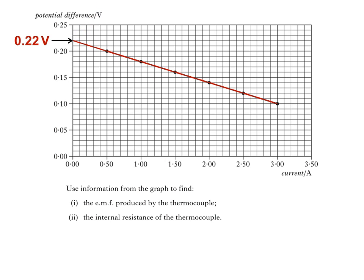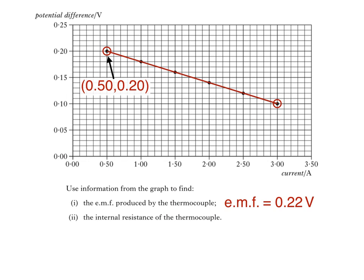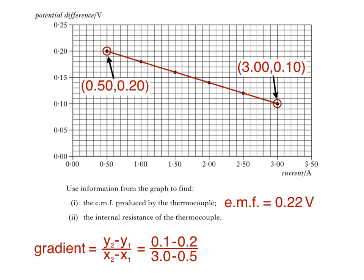Just remember a ruler for your exam, in case you have to do this. To find internal resistance from a graph of potential difference against current, we need to calculate the gradient. First, pick two points on the line. The first point has an x value of 0.5 (current) and a y value of 0.2 (potential difference). The second point has an x value of 3 and a y value of 0.1. Calculating the gradient gives a value for negative small r, where small r is the internal resistance in ohms. Gradient equals y2 minus y1 divided by x2 minus x1, which is 0.1 minus 0.2 divided by 3 minus 0.5, giving us negative 0.04. This means that internal resistance is equal to 0.04 ohms.